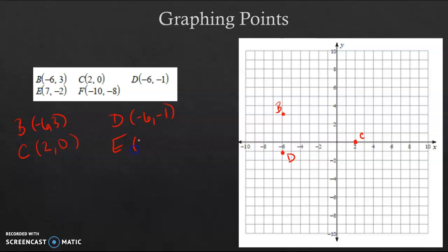E is (7, -2). So we're going to go right 7 and down 2. And that's where I'm going to place my E. So again, right 7, down 2, because there's a positive 7 with a negative 2.